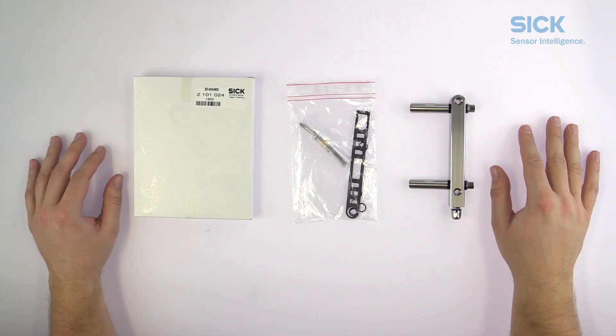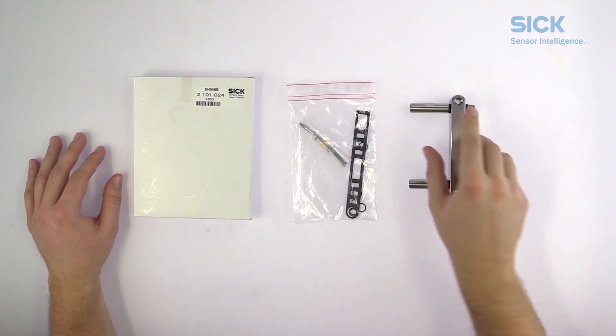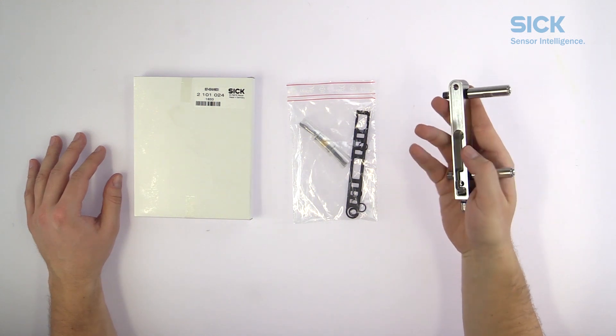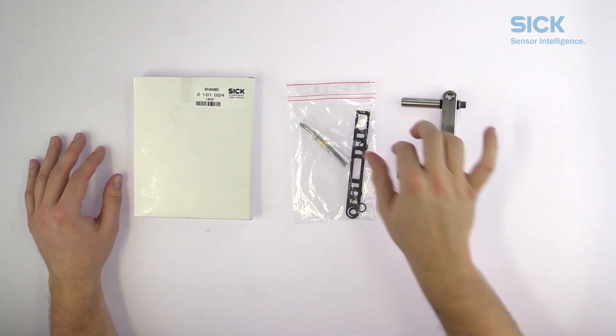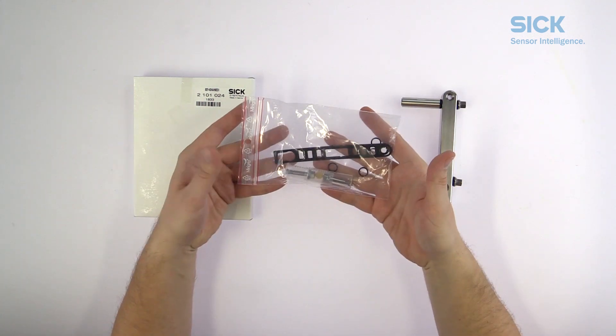Now let's have a look at what's in the box of the Twinox 4 bracket. Each Twinox 4 bracket comes with the mounting bracket itself that has already been preassembled like this and a bag with additional material.